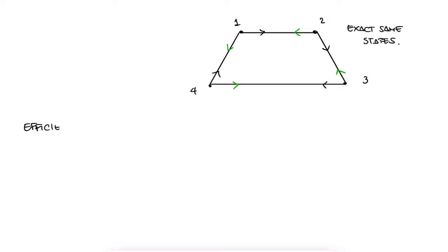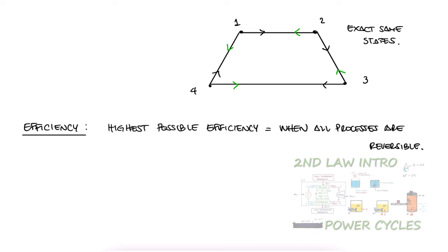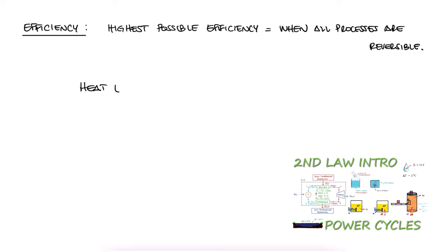So let's expand upon what I just said about efficiency. The most efficient cycle is where every process is reversible, even if just internally reversible. And let's start with the cycle that we discussed two lectures ago. Link below to it if you haven't watched it yet.